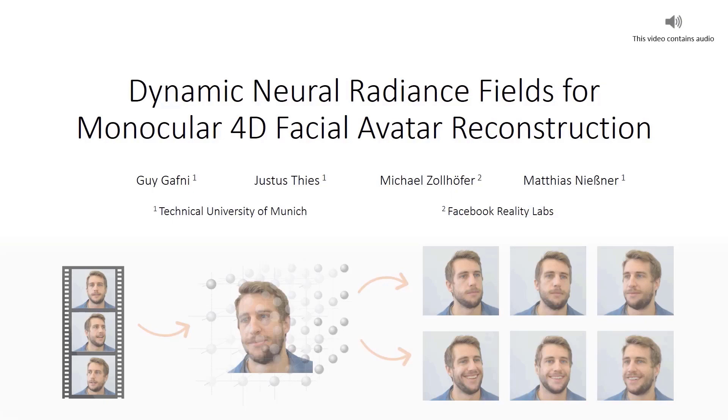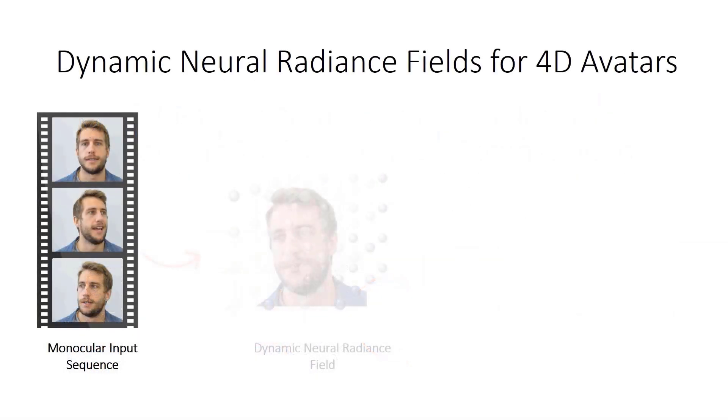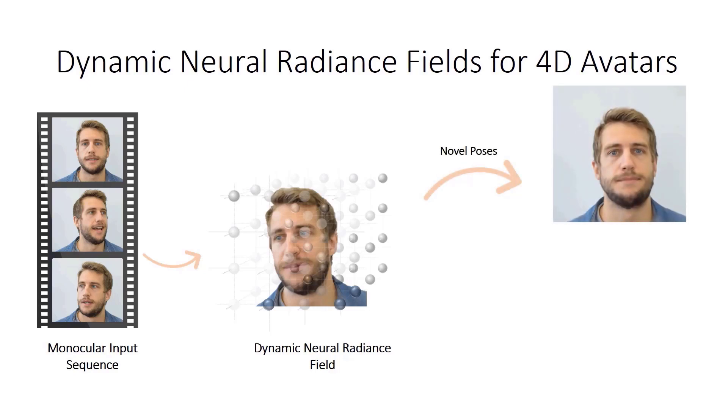We present dynamic neural radiance fields for monocular 4D facial avatar reconstruction. Given a monocular video stream of a talking person, we reconstruct a volumetric representation of the facial appearance and dynamics. Specifically, we propose a hybrid between a scene representation network and a low-dimensional morphable face model, which gives us explicit control over pose and expressions.